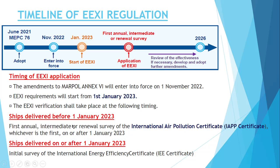For ships delivered before 1st January 2023, the first annual, intermediate, or renewal survey of the IAPP certificate needs to be completed. If your ship is delivered after 1st January 2022, you need to carry out an initial survey of the IEE certificate. In summary, if your ship is delivered before 1st January 2022, follow IAPP then IEC certification; if delivered after 1st January 2023, you only need IEE certification.